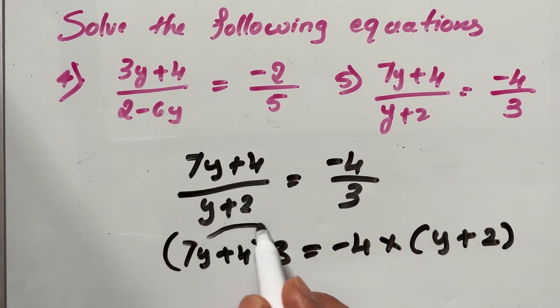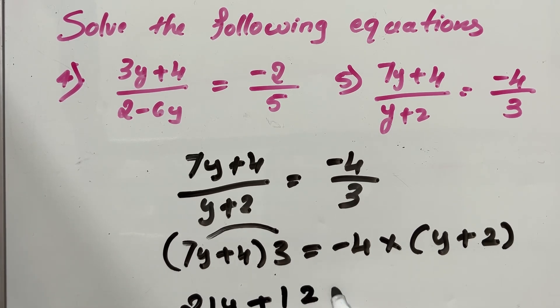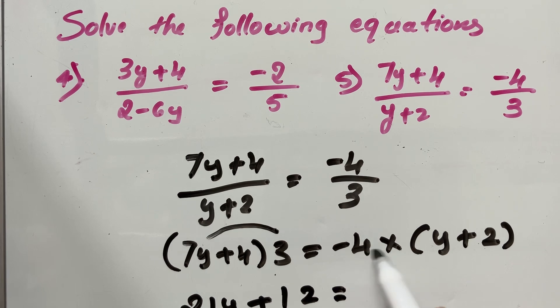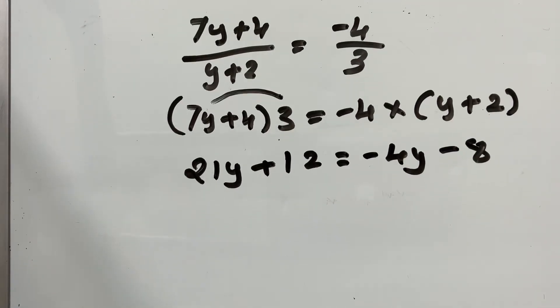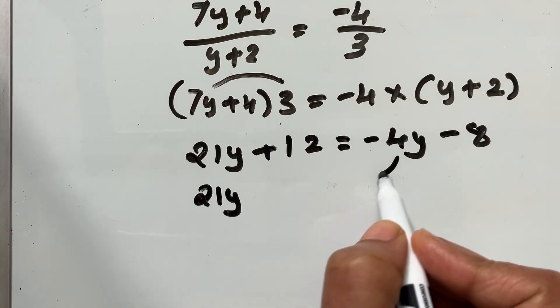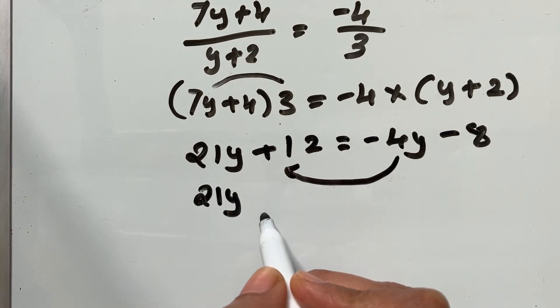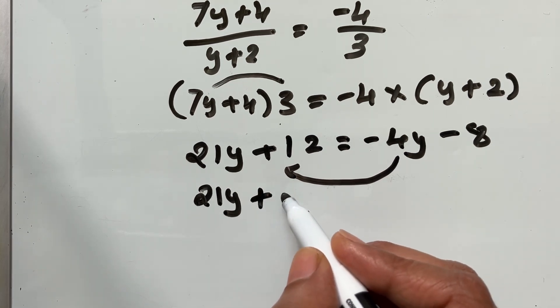Distribution property is 7y times 3 which is 21y plus 4 times 3 which is 12. And here negative 4 times y, negative 4y, and negative 4 times 2, negative 8. So, let's rearrange this equation.